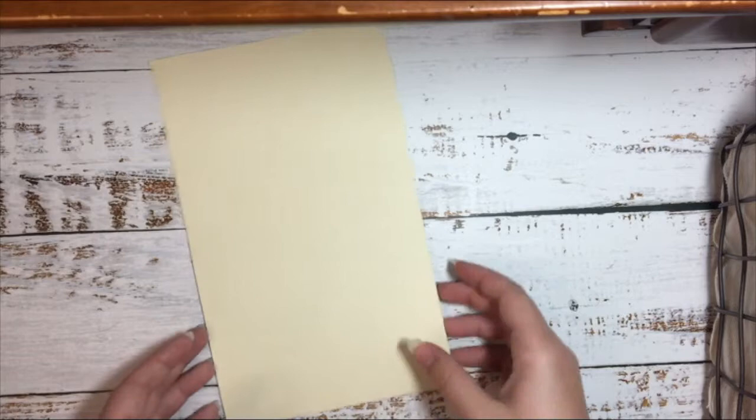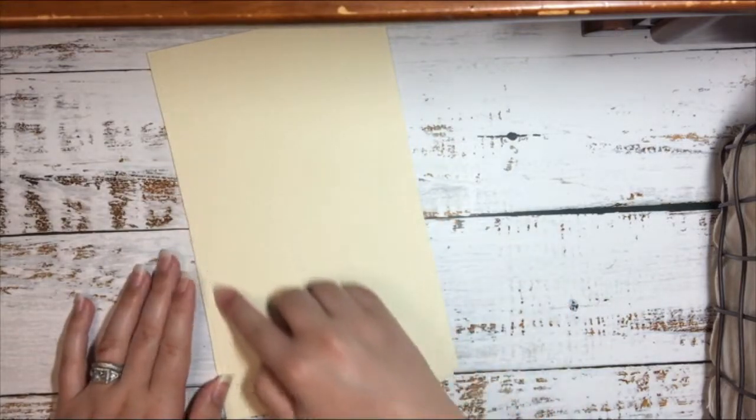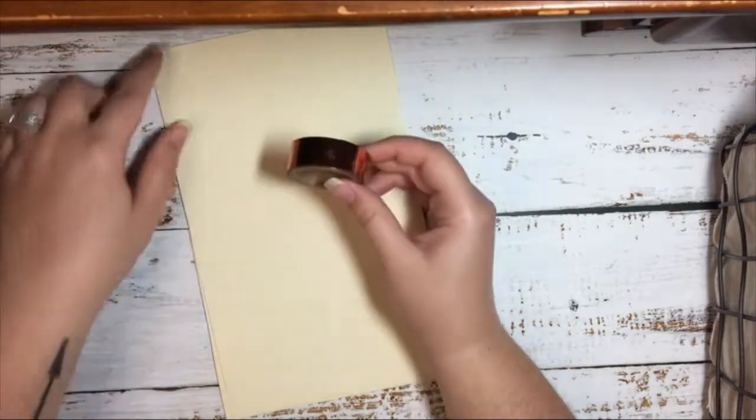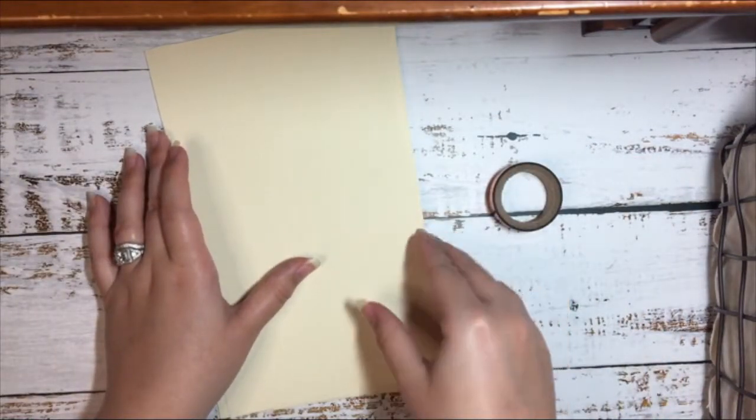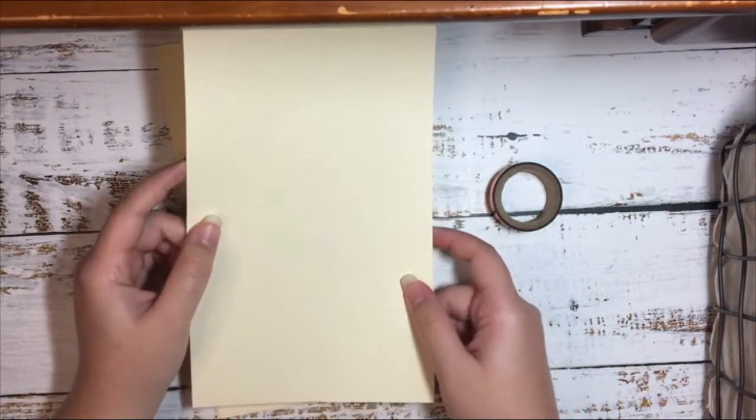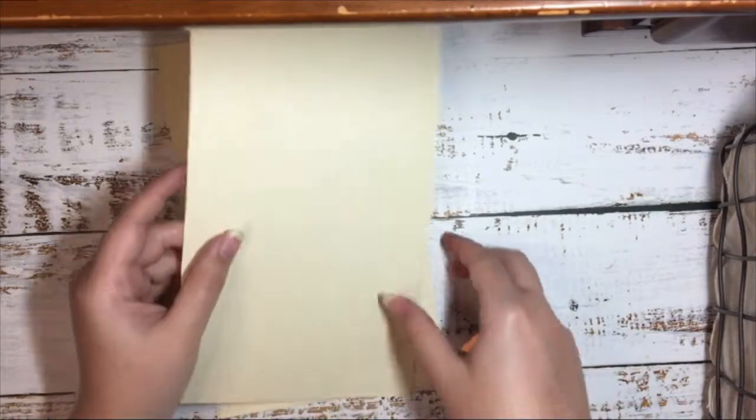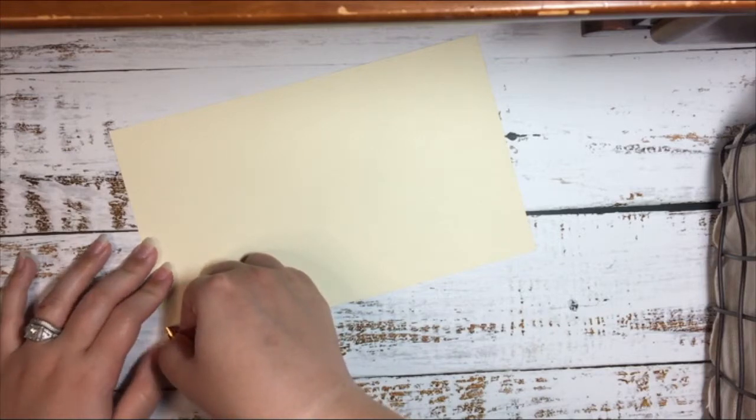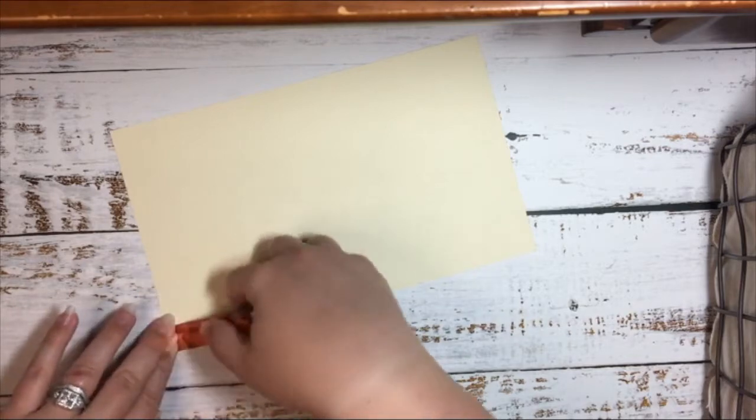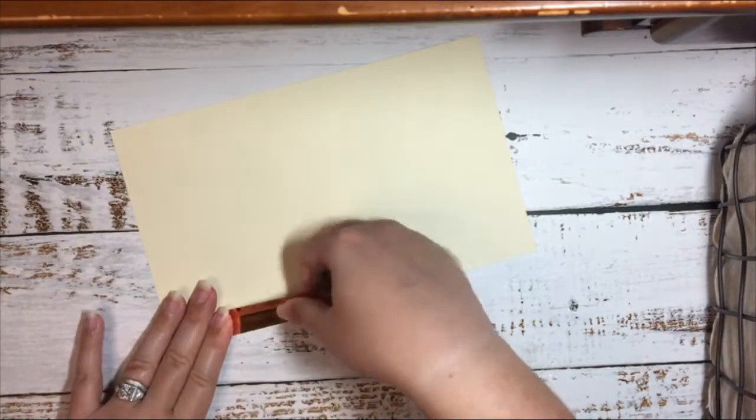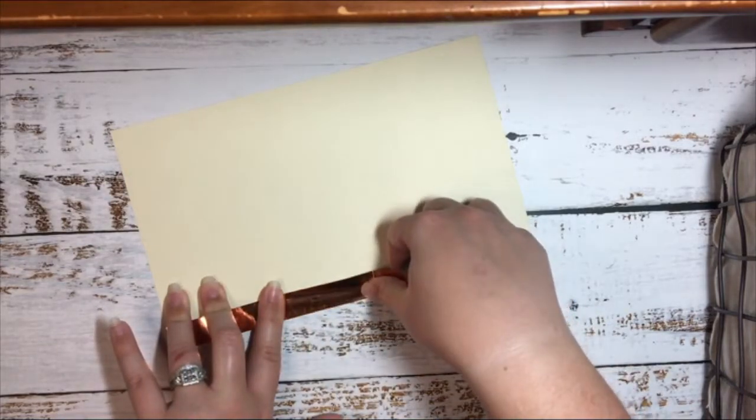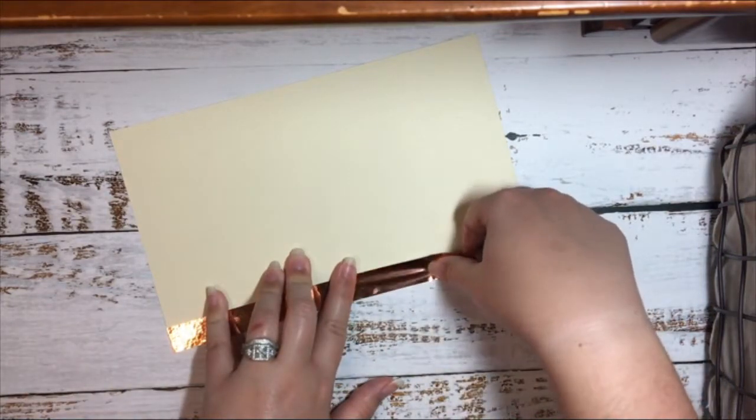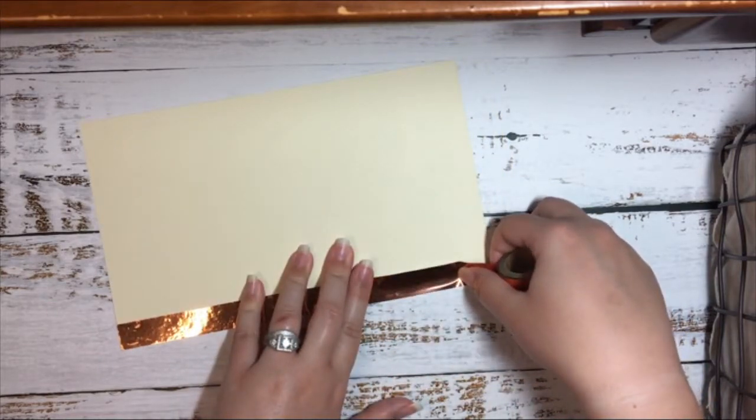Now that I have all of my cardstock cut out, I'm going to start by covering the edge with some washi tape. We're going to be using this rose gold copper tone washi to cover this edge because my paper is a light tan color. I'm going to line up my washi on the edge and go down all the way to the bottom to make sure my edge is covered.